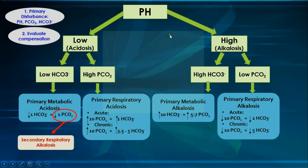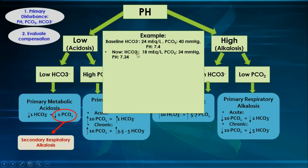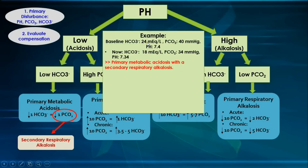For example, suppose baseline bicarbonate is 24 mEq/L, baseline pCO2 is 40 mmHg, and baseline pH is 7.4. A patient with diabetic ketoacidosis has a current bicarbonate of 18, pCO2 of 34, and pH of 7.34. The diagnosis is primary metabolic acidosis with secondary respiratory alkalosis, because the decrease in pCO2 appropriately matches the decrease in bicarbonate — one unit drop each — and the pH remains acidotic, indicating the compensation is working.